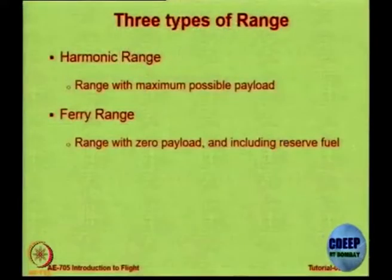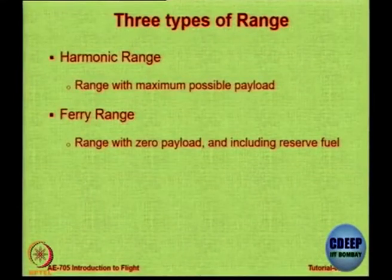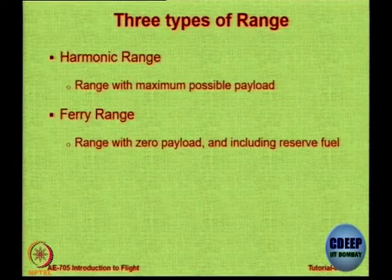The harmonic range corresponds to point A in the range-payload diagram. Then there is ferry range. In ferry range the aircraft is to be transported — for example, Airbus constructs an aircraft and wants to deliver it to an airline. The question is: how far can you go without refueling? In this case, you assume you will consume the entire fuel including reserve fuel. This is not normal operation; these activities are very carefully planned, with the entire weather map studied thoroughly. There are no passengers on the aircraft.